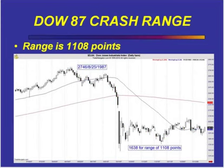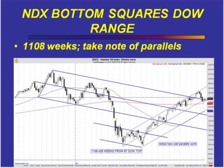Topping and bottoming is a process. What I want you to understand is something called range and price squaring. This is the 1987 Dow crash wave. It topped at 2746, bottomed at 1638, and the range is 1108 points roughly. Now we project out from that August 1987 top to the NDX bottom of November 21st, 2008. Guess how many weeks that was — you had a range of 1108 points on that Dow drop, and it spanned 1108 weeks until the NDX bottomed.